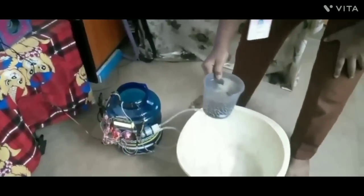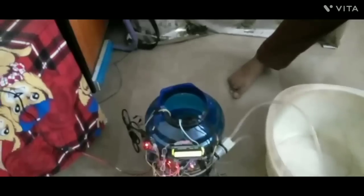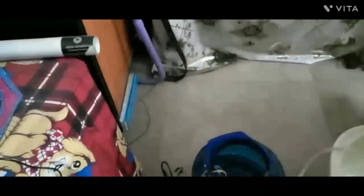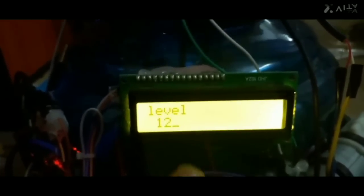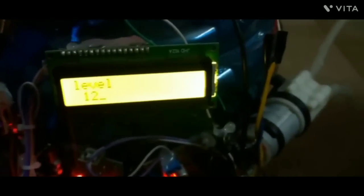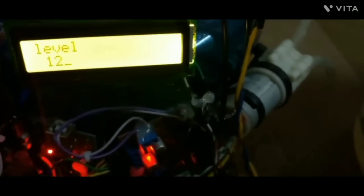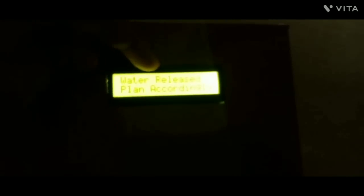Now I will pour more water in it to make it go up to level 2. I need some more water. As you can see, it's in level 2. Let's turn on the device. As you can see, it's now printing level 2. You might hear the buzzer which is ringing which would alert the government official to open the dam. And this is for the public in which it says water released, plan accordingly.